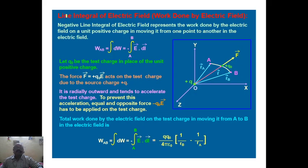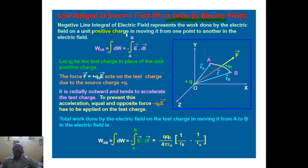Let us start with the first topic: the line integral of the electric field and work done by the electric field. The line integral of an electric field means the negative line integral of an electric field represents the work done by the electric field on a unit positive charge in moving it from one point to another in the electric field. Consider Q as a positive charge producing an electric field, and a unit positive test charge is moved from point A to B.